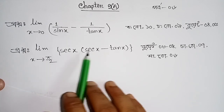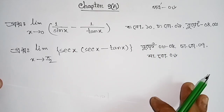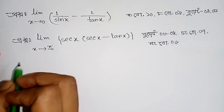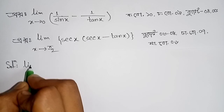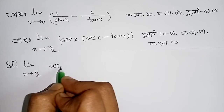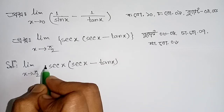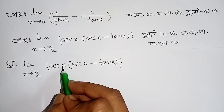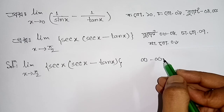Next problem: limit x approaches π/2 of secx · (secx minus tanx). Substituting x = π/2: sec(π/2) = infinity, so we get infinity minus infinity — an indeterminate form that needs to be resolved.